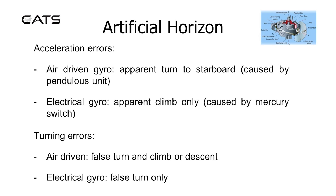Acceleration errors: For the air-driven gyro, an apparent turn to starboard is caused by the pendulous unit. In the electrical gyro, an apparent climb only is shown, caused by the mercury switch.